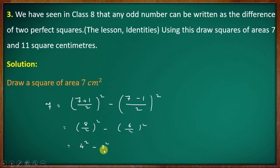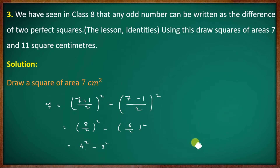The third side is the hypotenuse. We have 7 and we need to construct. From this, the triangle has a line of 3 cm.